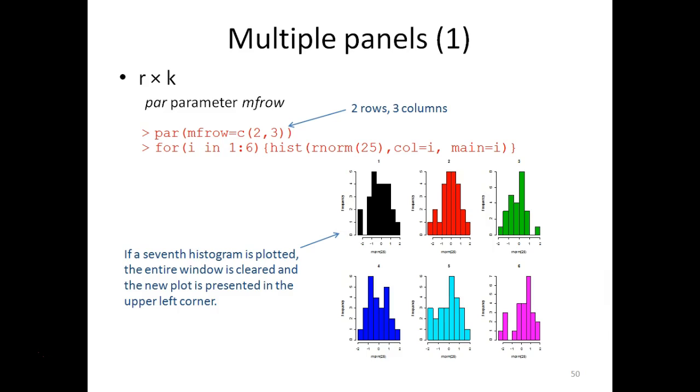For example, if you want to achieve this design with six panels arranged in two rows and three columns, then you can write par mfrow equals and then a vector containing the numbers two and three, meaning that you want two rows and three columns.